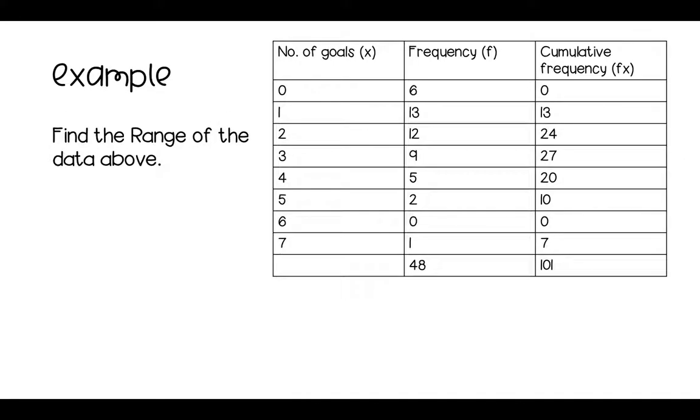So we're going to find the range of the data above. So our highest value here is 7 and our lowest value is 0. So our range is 7 take away 0 which gives us 7. So our range for this set of data is 7.